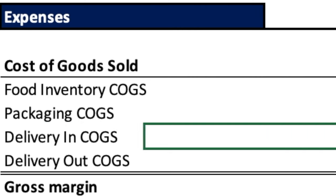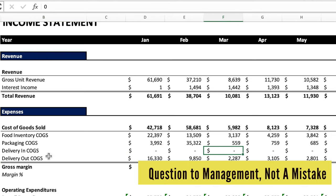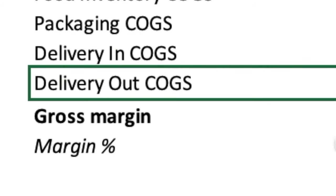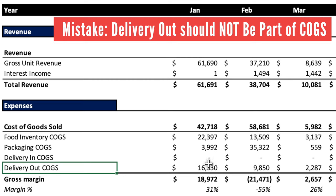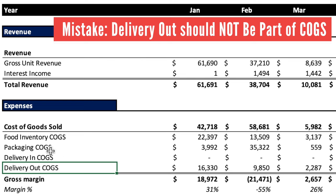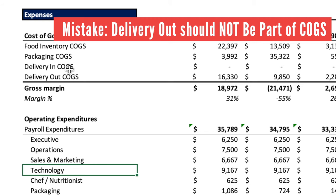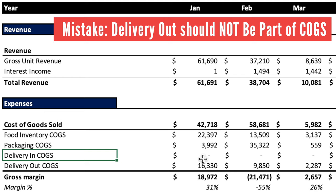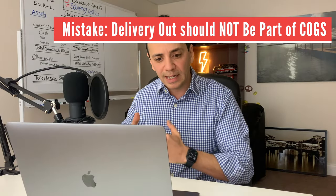Next is delivery in COGS. Delivery in — freight on goods, packaging, or raw materials — is typically part of inventory and thus part of cost of goods sold. But here it's zero every month, which makes no sense and is a potential problem. Then there's delivery out COGS. Unlike delivery in, delivery out should NOT be part of COGS. Recording delivery out here is a mistake — it's causing the gross margin to fluctuate severely. In February there's $9,000 in delivery out COGS; it should be recorded down in operating expenditure.